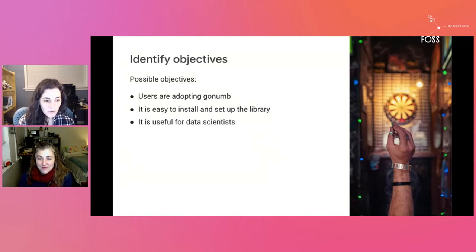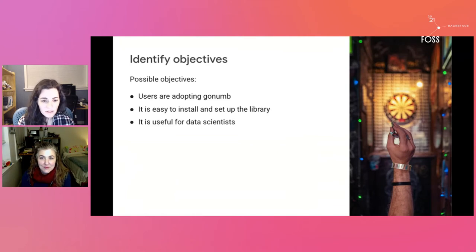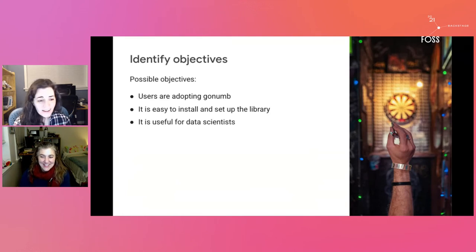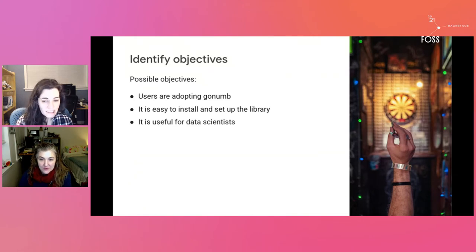Going back to the process we outlined earlier, remember our first step is to identify the objectives. We've identified three possible ones. The first is: is our target user adopting it? The second is: is it easy to set up by themselves? — I feel like with a lot of data science libraries, people kind of get stuck on the installation process. And finally: does the library meet our target user's needs?